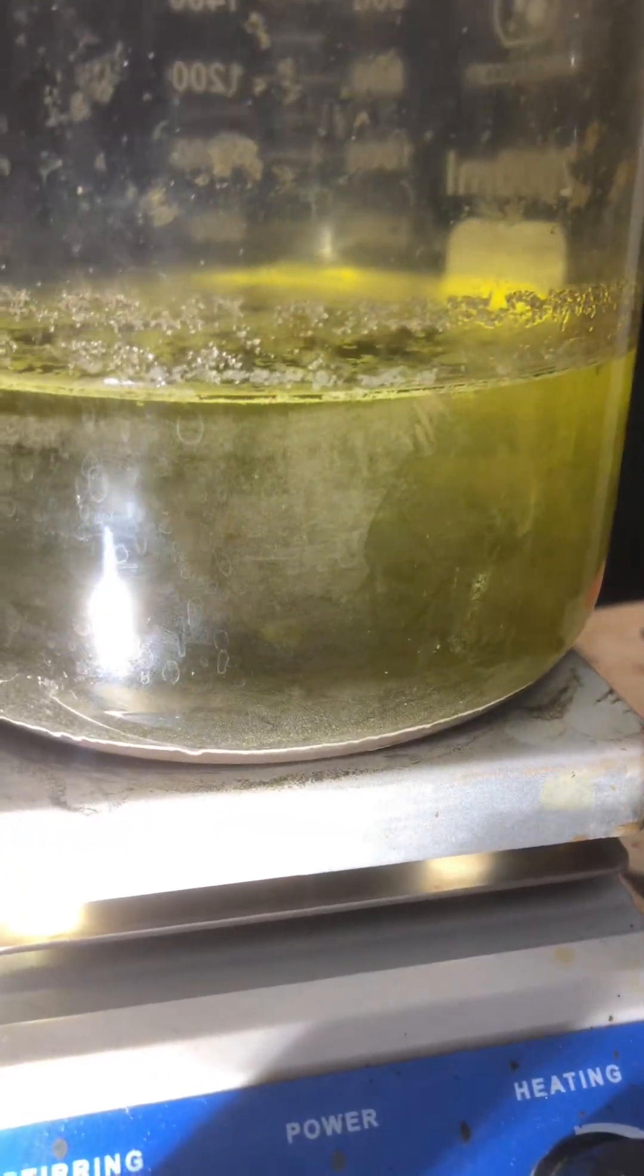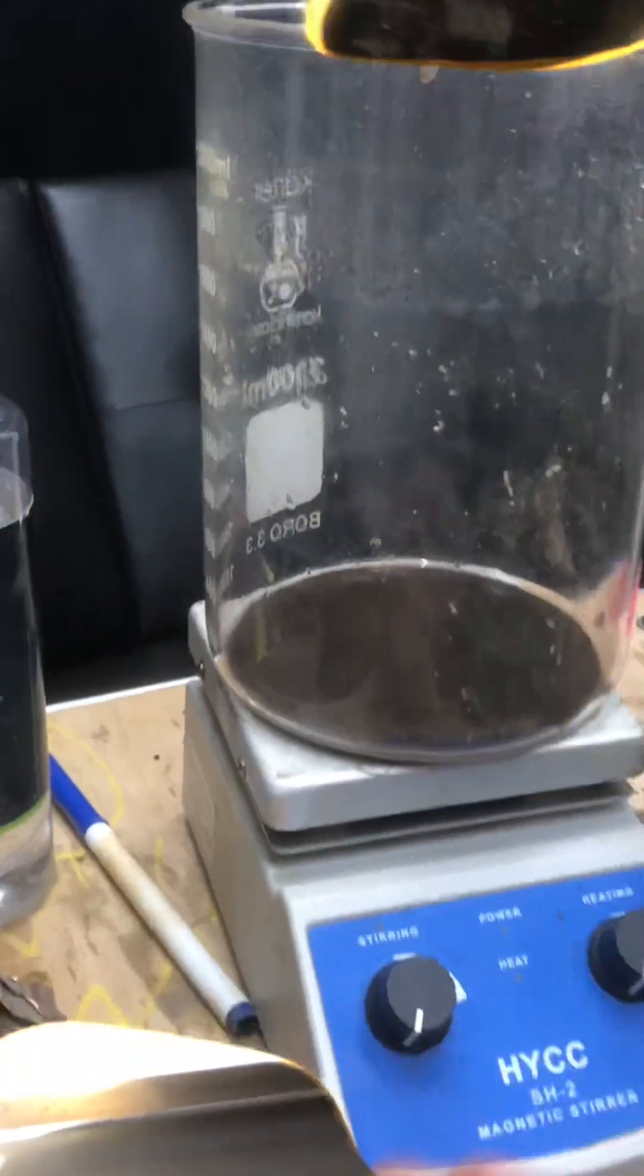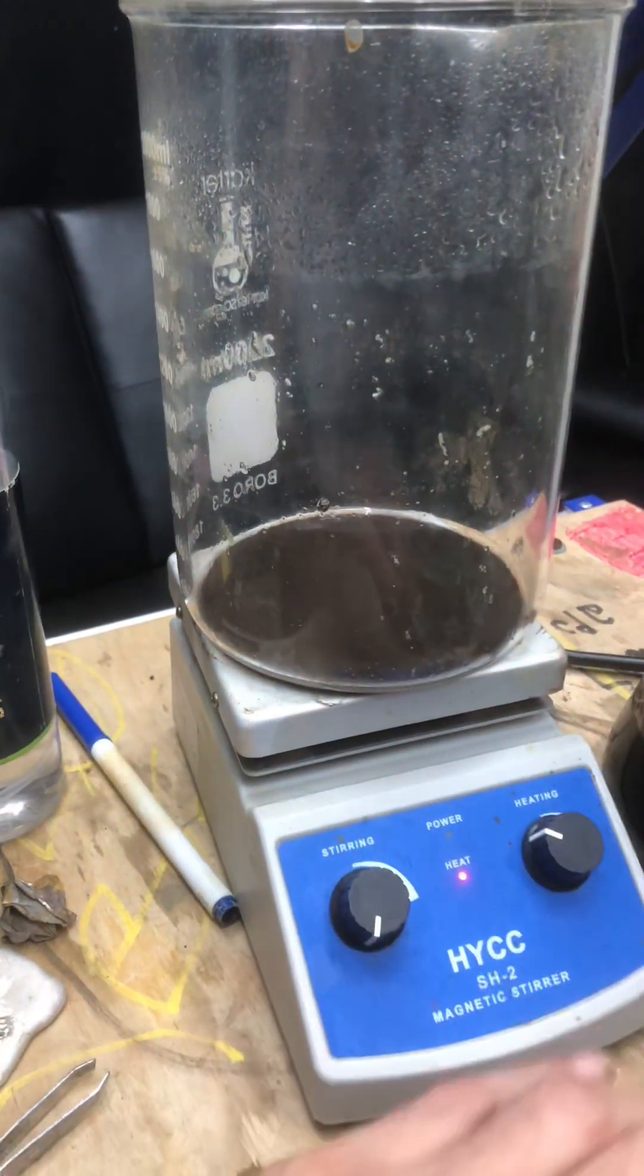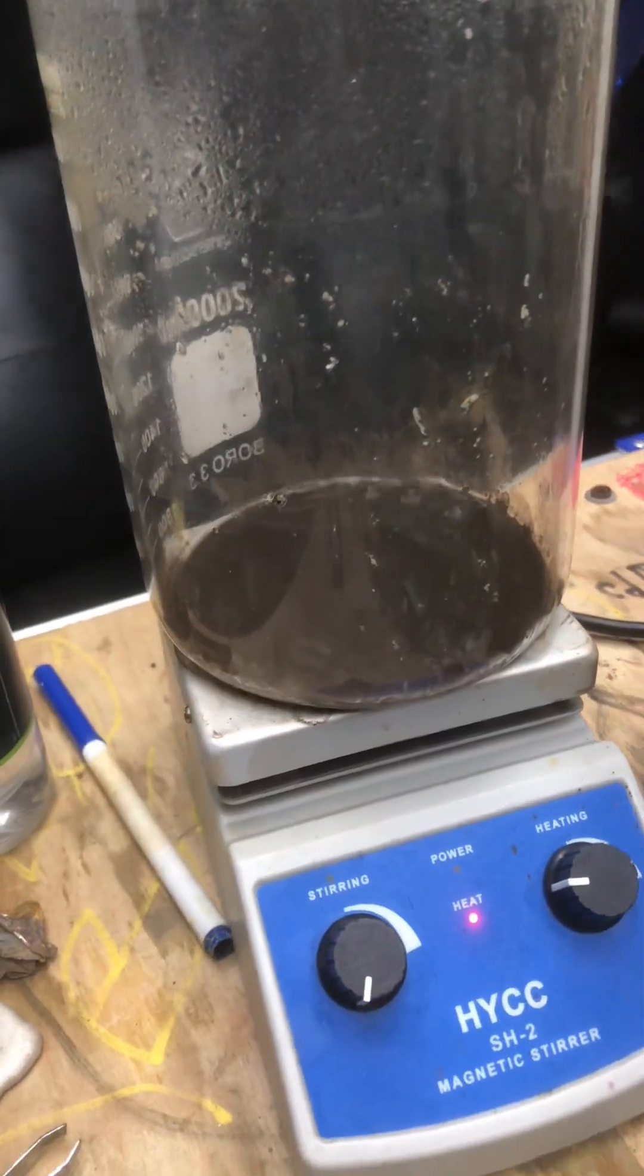Now pour off the excess muriatic acid, rinse with some water, and let your powder sit on the burner to burn off the excess water. The powder will turn into dust in the beaker.